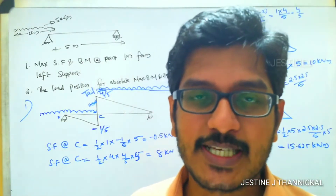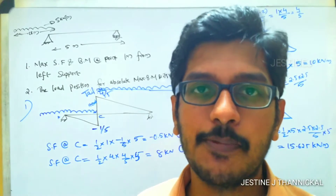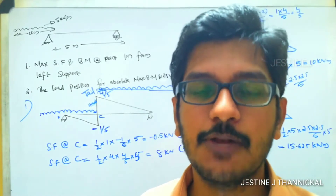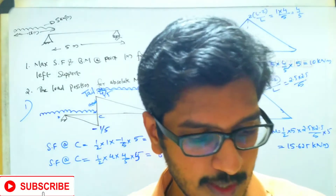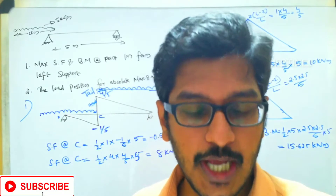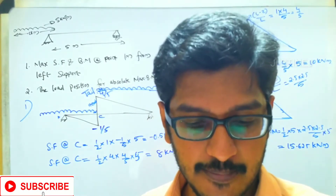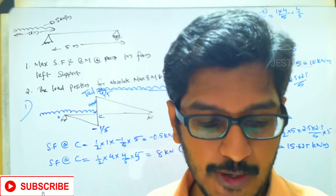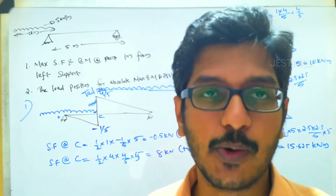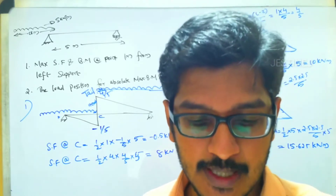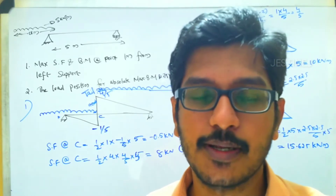Welcome to a new video lecture. Today we will discuss a problem related with the influence line diagram. A UDL of length 10 meters and density 5 kilo Newton per meter is crossing a simply supported beam of span 5 meters.